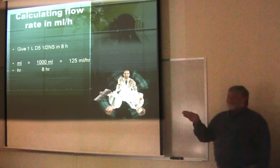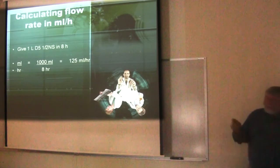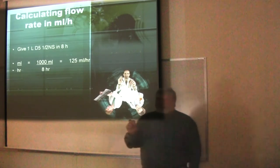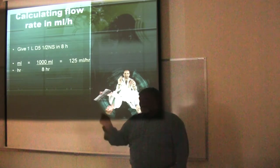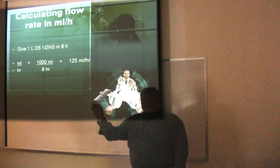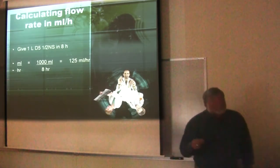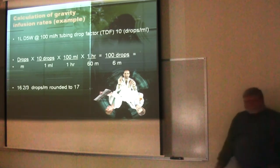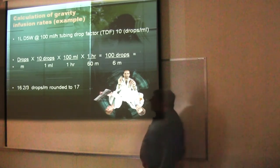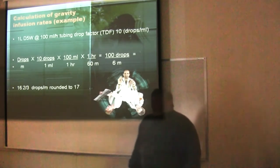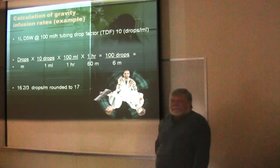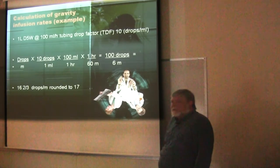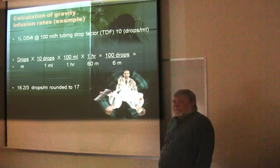Even in the ICU when you're doing micrograms per kilogram per minute, when you set it up on the pump it will tell you how many mLs per hour it's giving. You record it both ways because it's an I&O. The time this really comes into play is when you're doing gravity drips. In the hospital they use pumps everywhere, except maybe in the ED where they'll hang a bag and count drops.